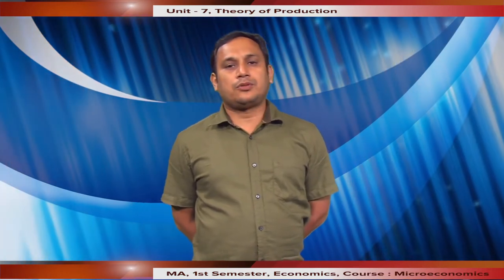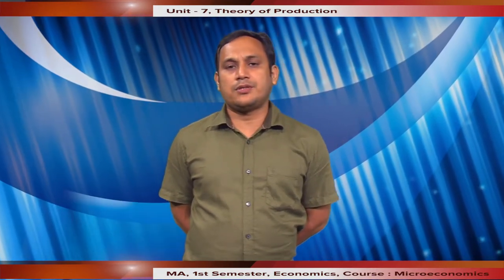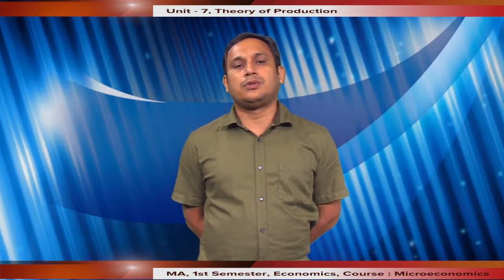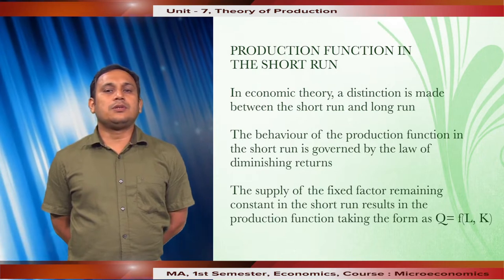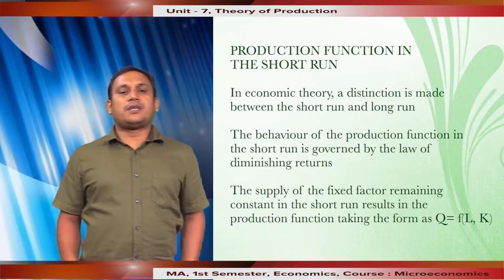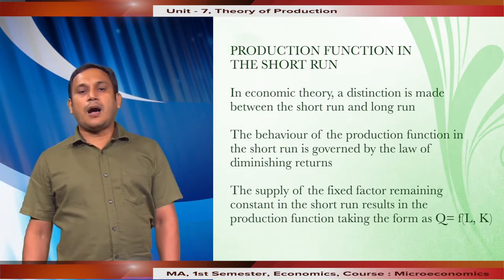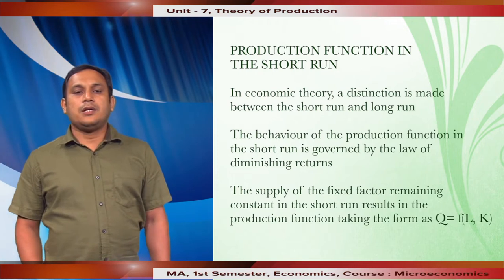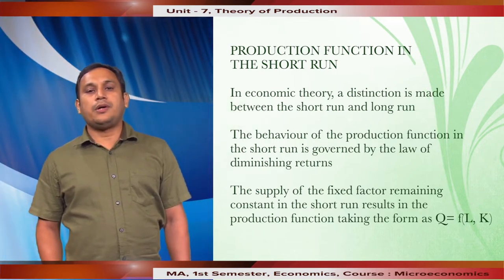A production function can be explained in the short run or in the long run, and there are basic differences between the two. We will start with the production function in the short run, which is also known as the law of variable proportion. The short run is a time period when it is not possible to increase the supply of certain factors, especially the fixed factors. Accordingly, changes in output can come about only through changes in the supply of the variable factor. The behavior of the production function in the short run is governed by the law of diminishing return, also known as the law of variable proportion or return to a factor.